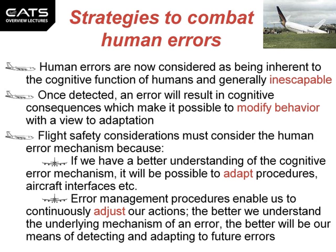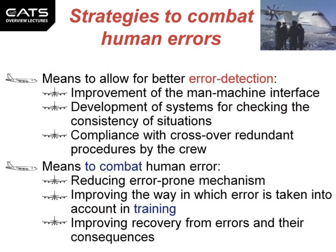Error management procedures enable us to continuously adjust our actions. The better we understand the underlying mechanism of an error, the better our means of detecting and adapting to future errors. Means to allow for better error detection include: improvement of the man-machine interface, development of systems for checking the consistency of situations, and compliance with crossover redundant procedures by the crew. Means to combat human error include reducing error-prone mechanisms, improving the way in which error is taken into account in training, and improving recovery from errors and their consequences.